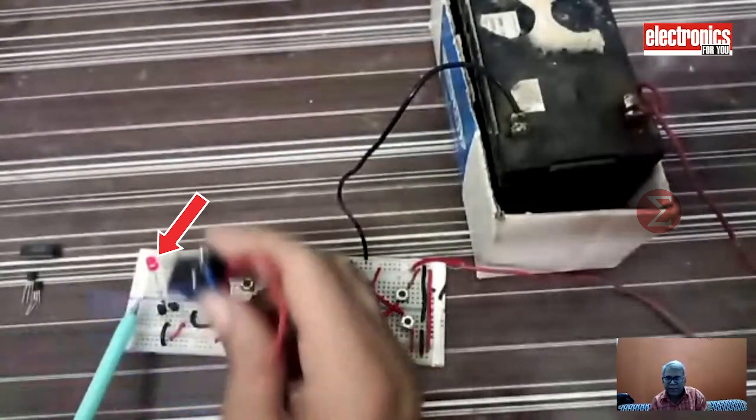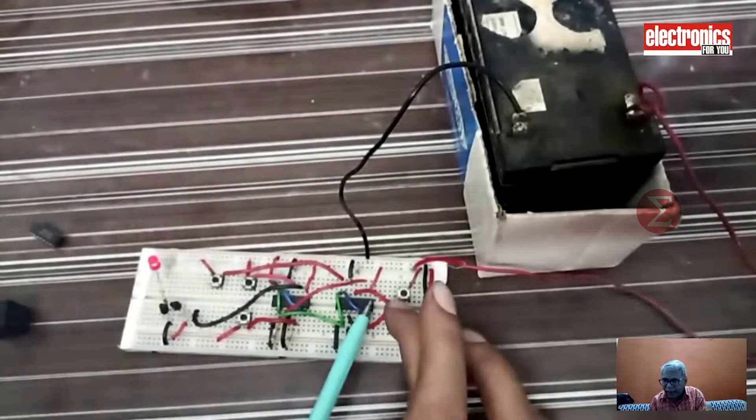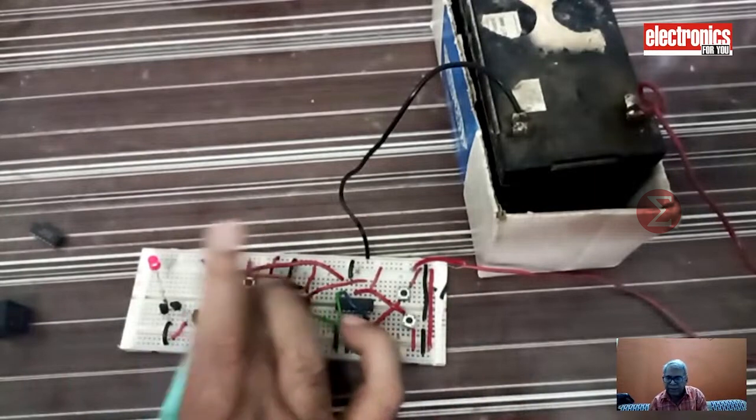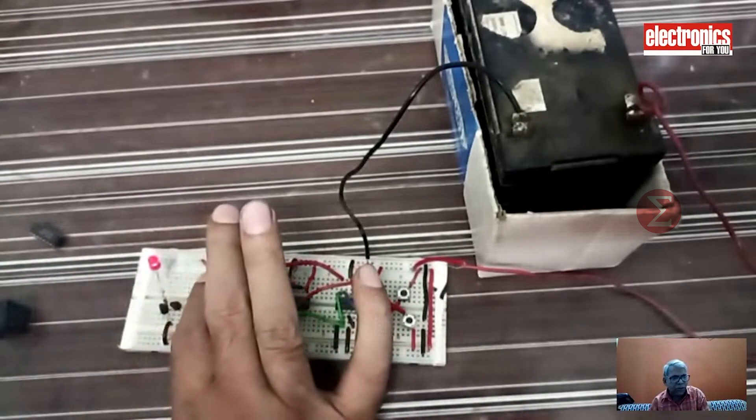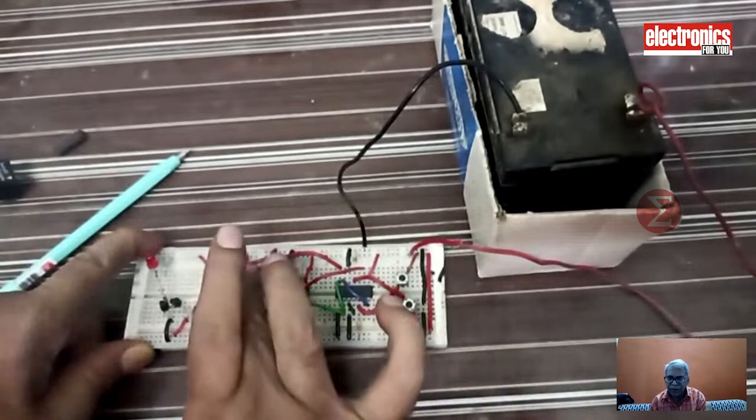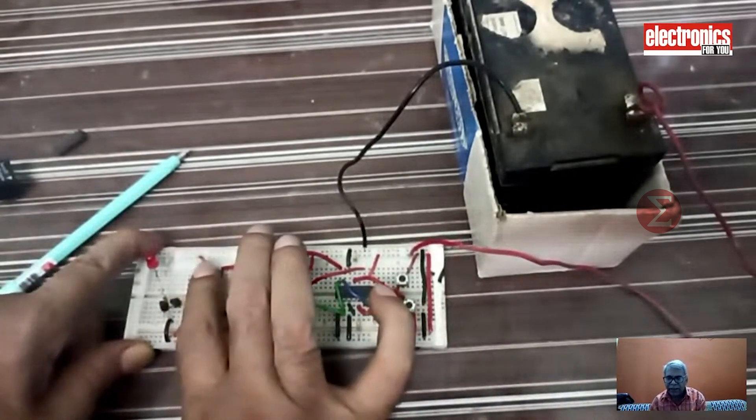In place of the relay, we have used this LED. As you have seen, we have pressed 8, 2, 6, 5 and the gate is open. Now to reset, press any switch. After reset, if you press the correct code, the gate will not open. This is a very secure system.